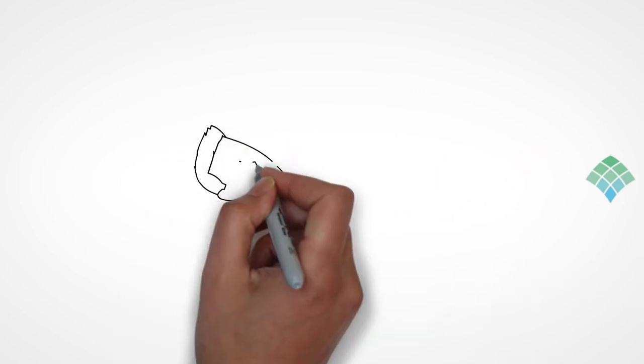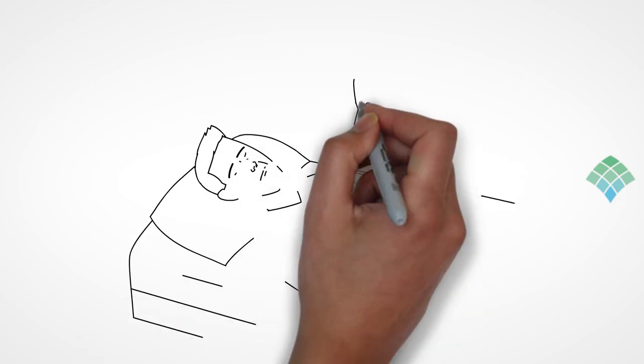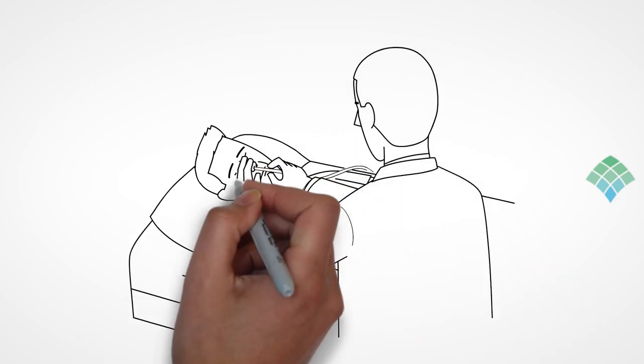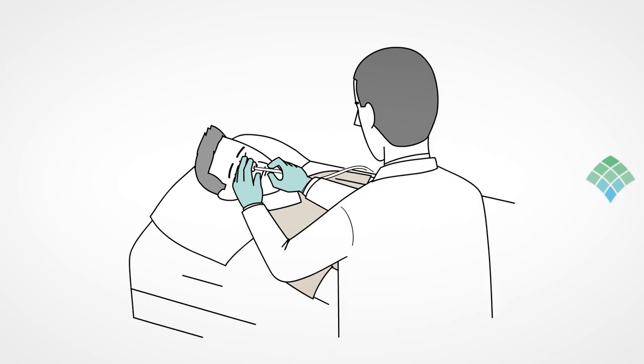When all of the swallows have been obtained, the nurse will remove the catheter. The tape will be removed and you will be asked to take a deep breath in and blow out.